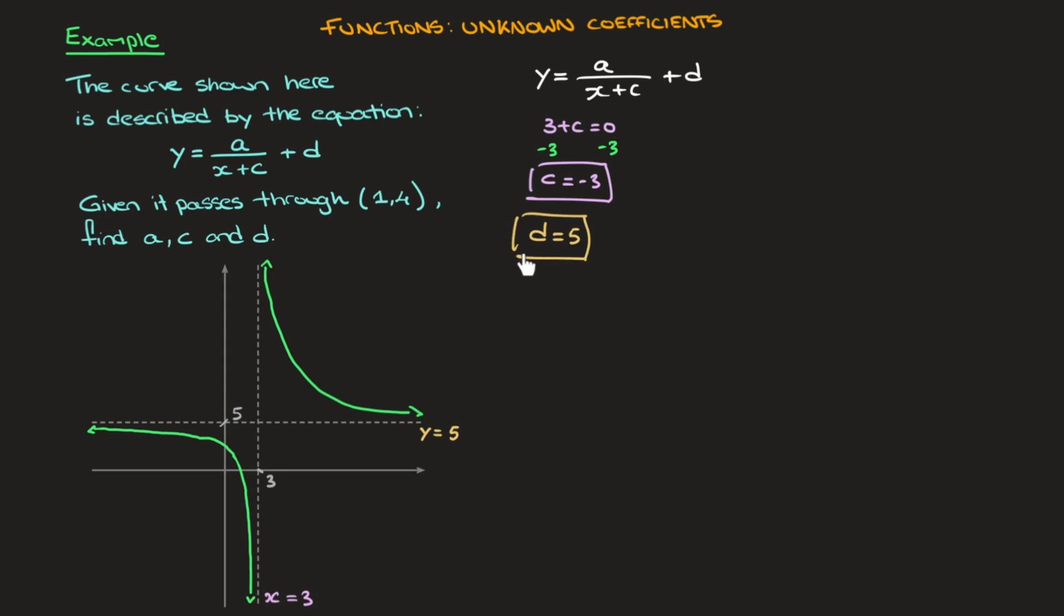And now let me spend just a minute to further explain why d is equal to 5. Let's say for a second that we still don't know what d is. And I'll temporarily give you the value of a, which I'm going to prove to you in a minute. a is equal to 2. So this function's curve has equation y equals 2 over x plus c. And since c was negative 3, that's x minus 3 plus d. Now looking at the curve that we have here, we've already established that it has a horizontal asymptote whose equation is y equals 5.